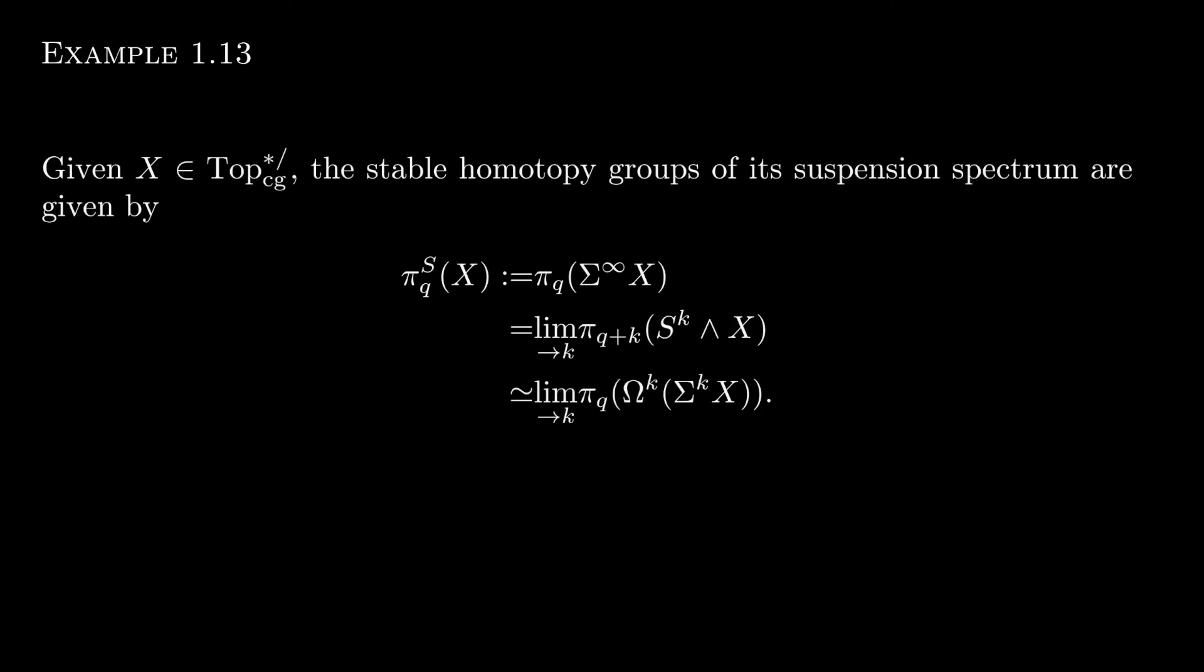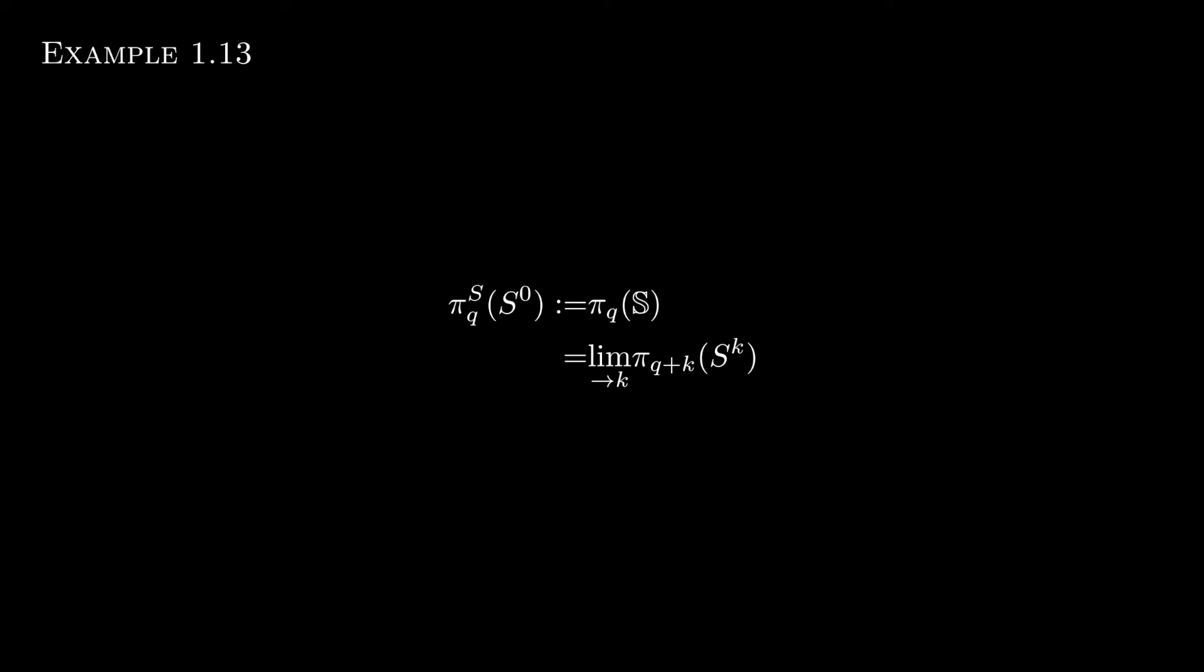A nice example to think about is the stable homotopy groups of a topological space's suspension spectrum. We have this nice way of writing them because the component spaces are n-fold suspensions of that starting space. We apply this idea to the standard sphere spectrum, and we have an even easier way of writing the co-limit, as the k-th component space is just the standard k-sphere.